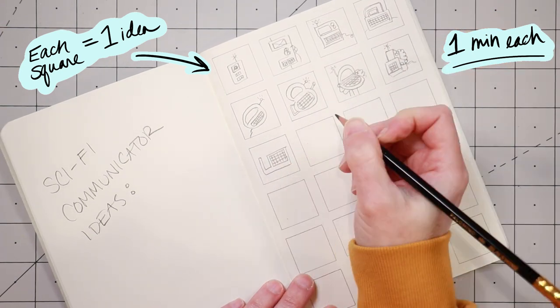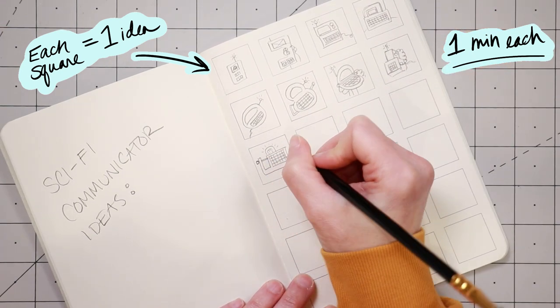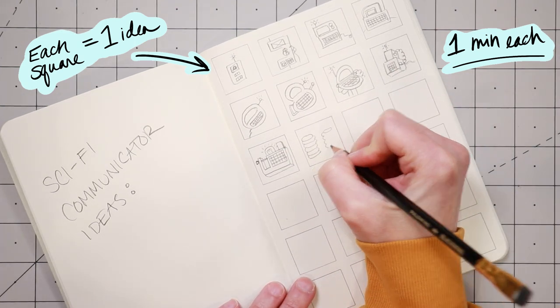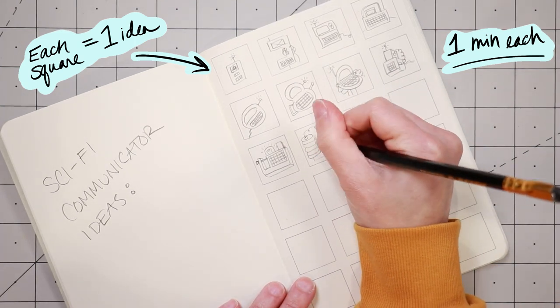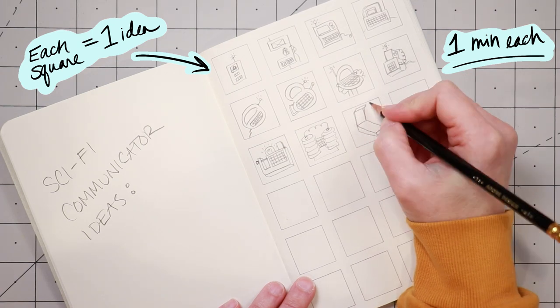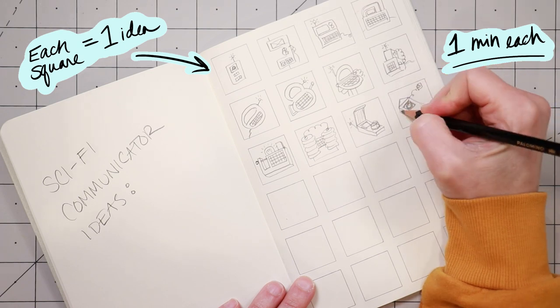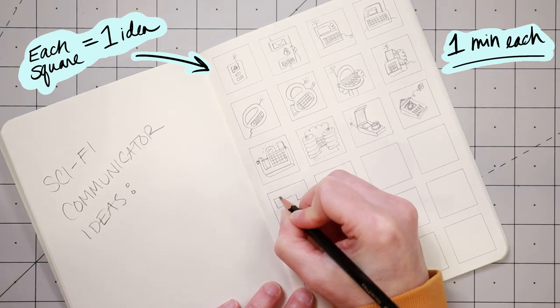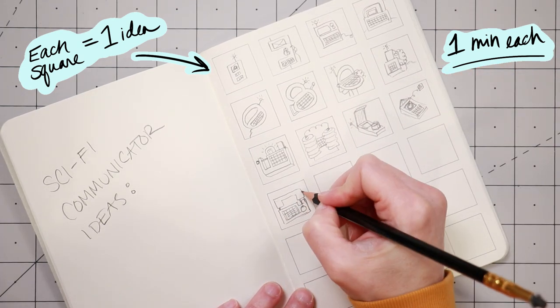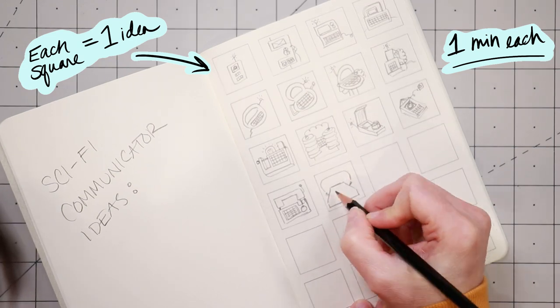Try to make each sketch different than the last one. It takes some effort to do this, but that's the point. You are forcing yourself to think way past your first idea, and come up with lots of different possible directions. The sketches are small, so you can do them quickly. And you can't get into too much detail, or get too attached to any one idea yet.